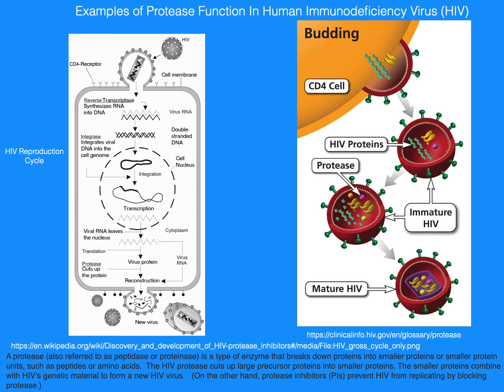Examples of protease function in human immunodeficiency virus, HIV. A protease, also referred to as peptidase or proteinase, is a type of enzyme that breaks down proteins into smaller proteins or smaller protein units, such as peptides or amino acids. The HIV protease cuts up large precursor proteins into smaller proteins. The smaller proteins combine with HIV's genetic material to form a new HIV virus.